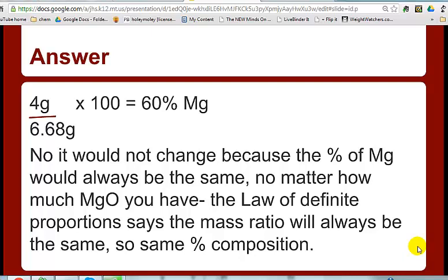Now would that change if we only started with one and a half grams of magnesium oxide? No, it would not change because the percent of magnesium is always the same. That's what the law of definite proportions says. The ratio of magnesium to oxygen is always going to be the same in that compound. You'll always have 60% magnesium and magnesium oxide.